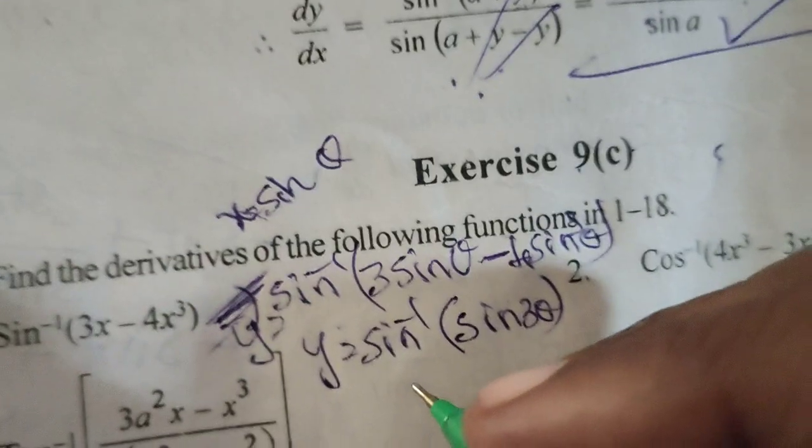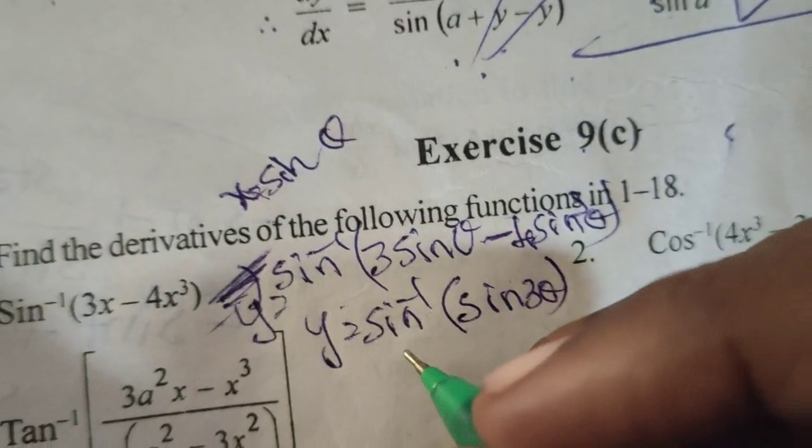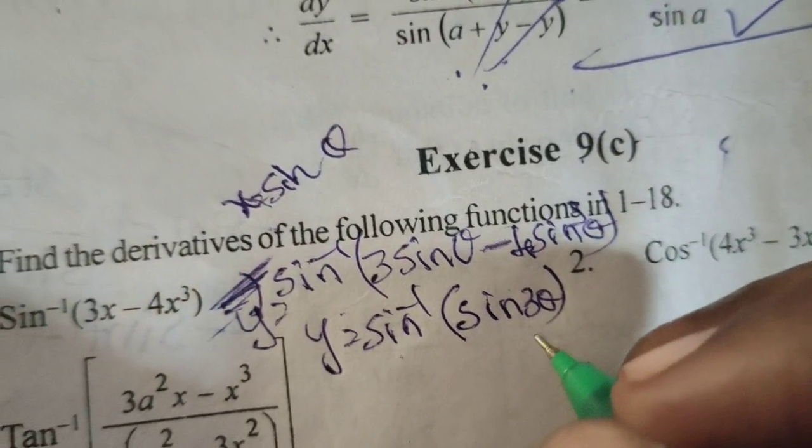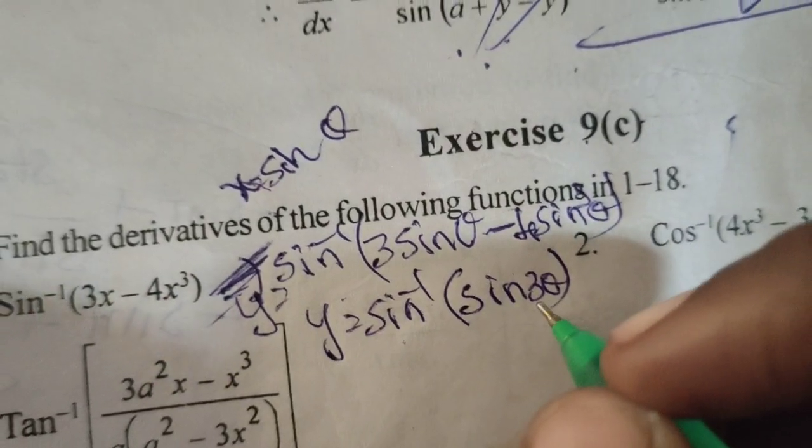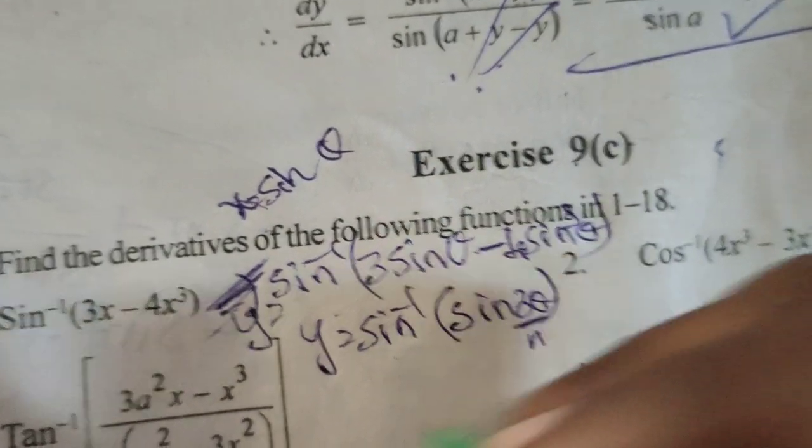According to the inverse trigonometric function, sine inverse of sine x, we know that equals x. Here in place of x, 3 theta is there. Therefore,